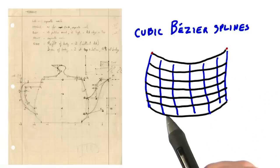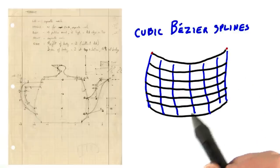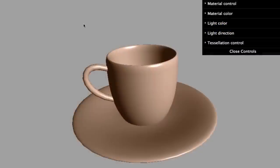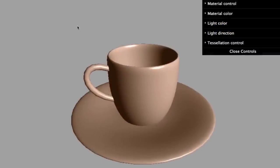To render these patches interactively, we often convert them into grids of triangles. This type of modeling is useful for creating all sorts of curved surfaces, such as car bodies.